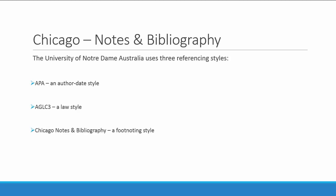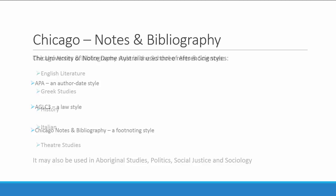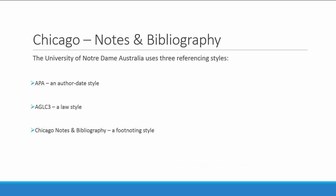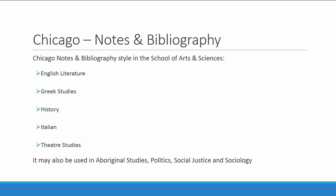Footnote styles are often used in the arts and humanities disciplines, so the Chicago style is used by the schools of philosophy and theology and arts and sciences on all Notre Dame campuses. The disciplines from arts and sciences that use the style are English literature, Greek studies, history, Italian, and theatre studies.